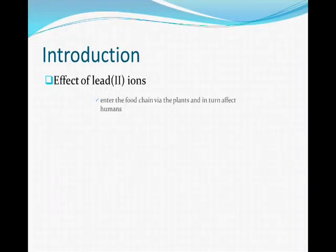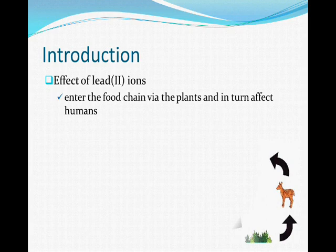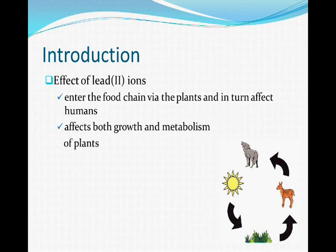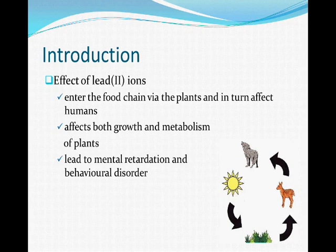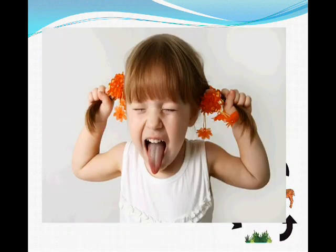Lead ions can enter the food chain via plants and in turn affect human health. High accumulation of lead ions affects both the growth and the metabolism of plants. These phytotoxic effects of lead ion contamination depend on its concentration, plant species, pH, and other factors in soil. Excessive lead exposure can lead to mental retardation and behavioural disorder.